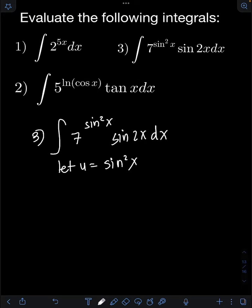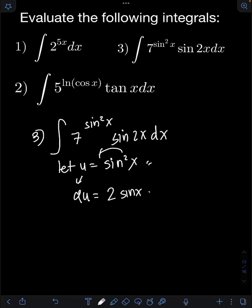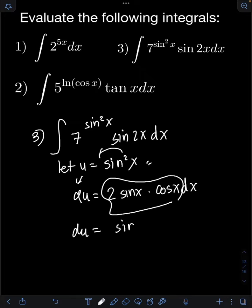Getting the derivative of both sides: for sin squared x, we apply the power rule — bring down the 2, copy the base sin x raised to 1, giving 2 sin x. By chain rule, multiply by the derivative of sin x, which is cos x, then dx. Applying the double angle identity, 2 sin x cos x equals sin 2x, so du equals sin 2x dx.